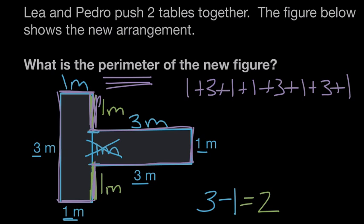So, we can add these lengths. When we combine these lengths, they'll tell us the total distance around the outside. One plus three is four plus one more is five plus one more is six, six plus three is nine, nine plus one is ten, ten plus three is thirteen and thirteen plus one more is fourteen. So the perimeter of the new figure of this new table arrangement is fourteen meters.